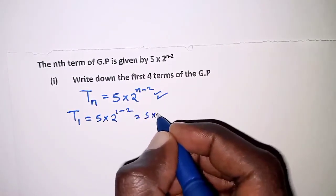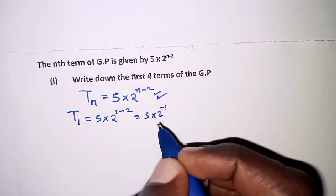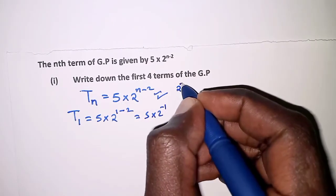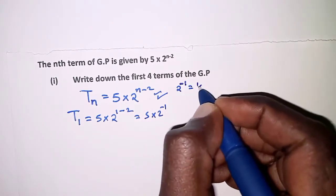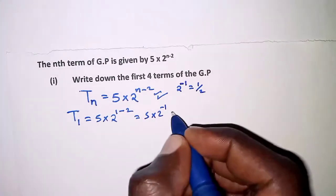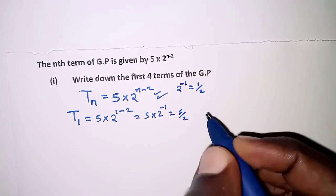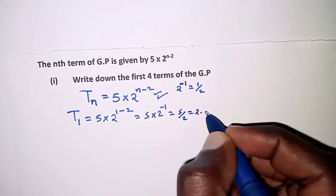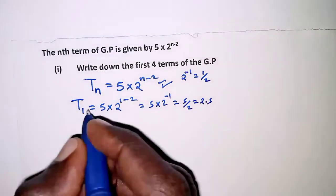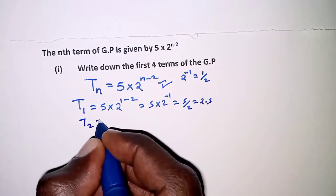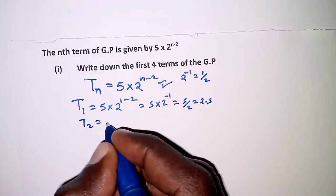5 × 2^(-1). And remember 2^(-1) is 1 over 2, so this is just 5 over 2, or if you like, 2.5. And the second term, n is 2, so we're going to have